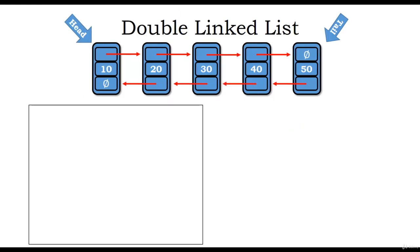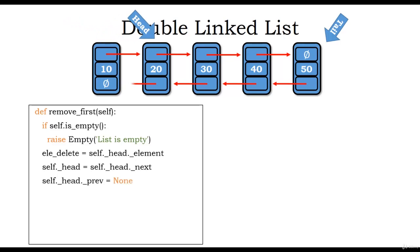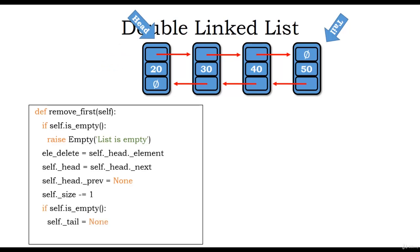To remove the first element, we define remove_first and check if the list is empty. If not, we retrieve the element to delete using element_delete = self.head.element. Then we move head to head.next, assign previous of the new head as null, decrement the size, and return the deleted element.